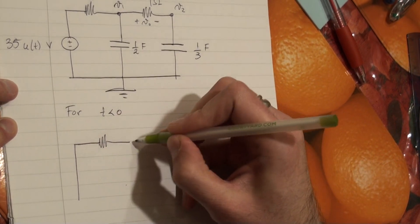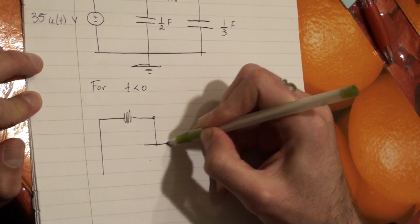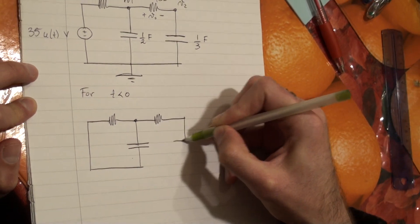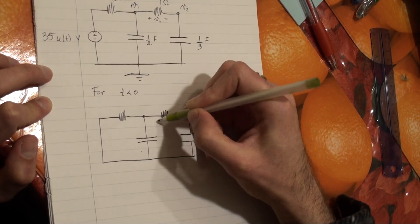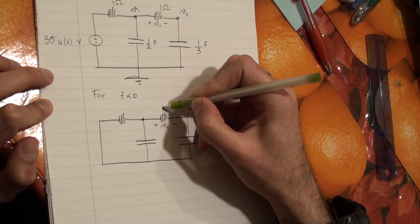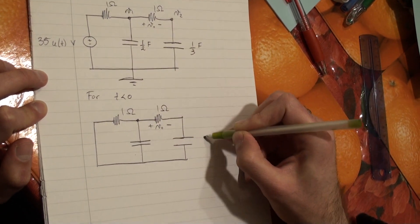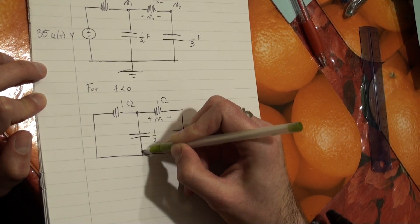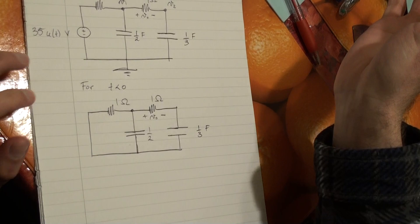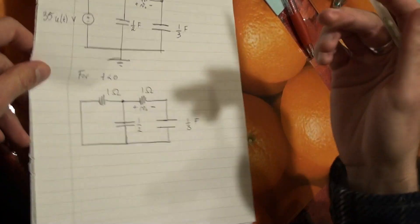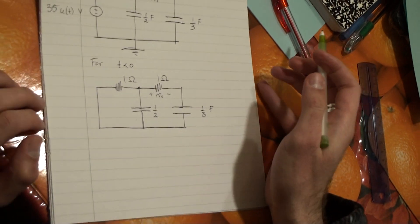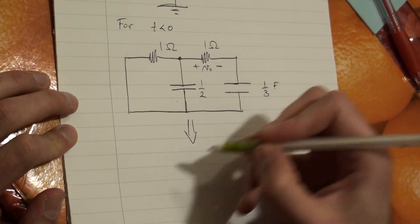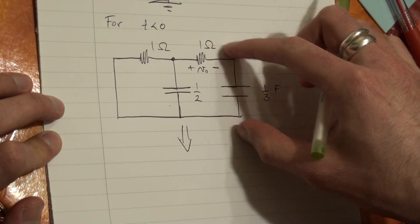This is our circuit before time 0. Our capacitors are still present. This is our voltage of interest V0. This is 1 ohm, 1 ohm, 1/3 farads, and 1/2 farads. We assume this has been from negative infinity to 0 — it's been a long time before our voltage source comes into play. So we can assume that it has reached steady state, and in steady state, our capacitors become open circuits.